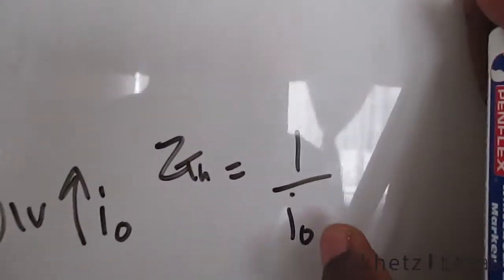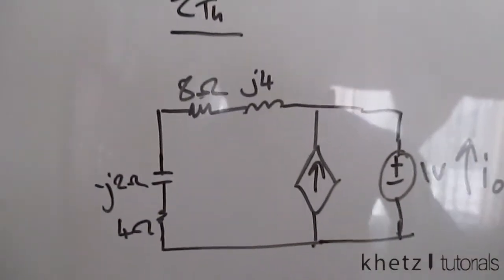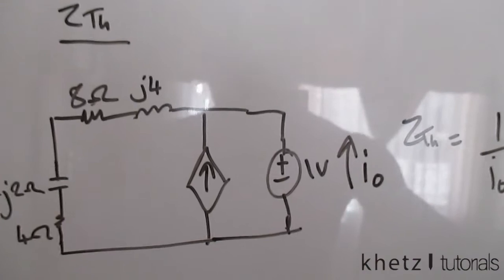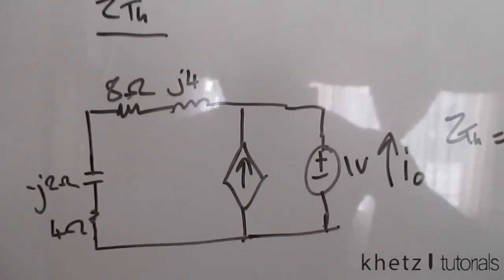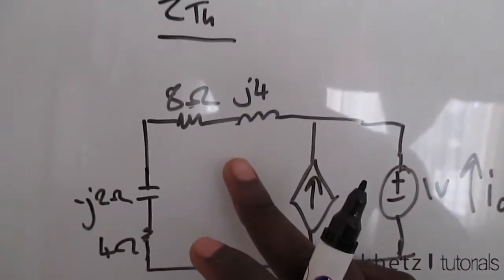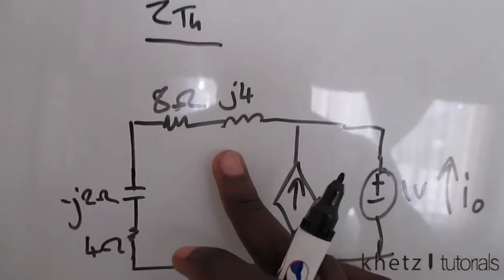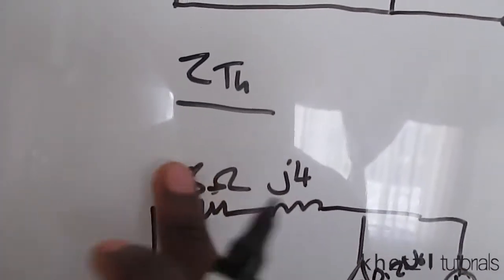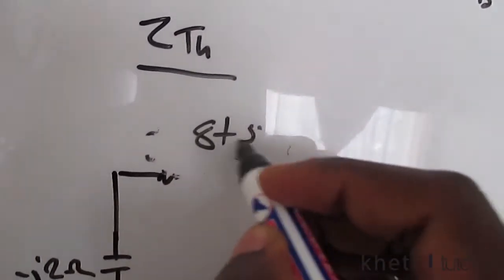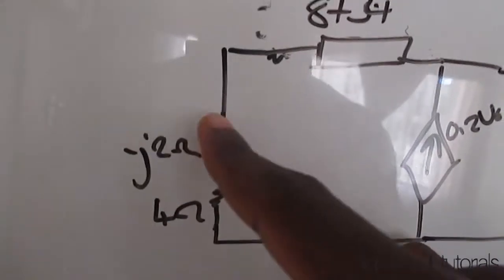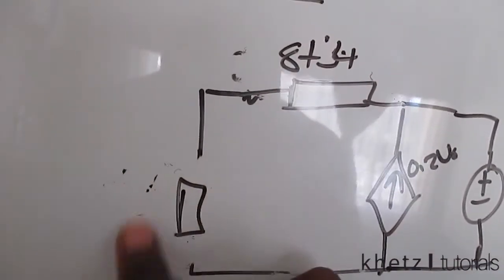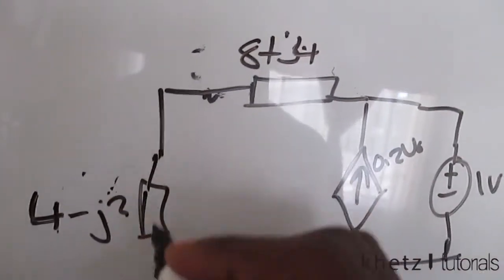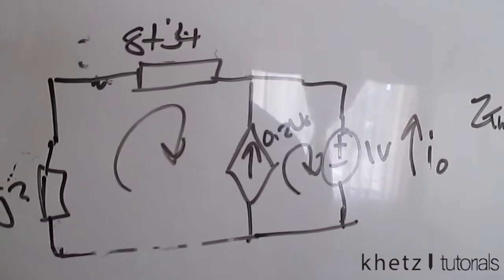Our aim is to find IO, which will help us find ZTH. For this circuit, you can do either node analysis or mesh analysis. For this problem the quickest approach is mesh analysis. The dependent source is 0.2 VO. We combine the 8 ohm and j4 into one impedance of 8 + j4, and combine 4 ohm and negative j2 into a single impedance of 4 − j2.